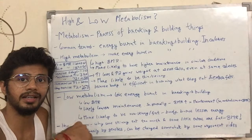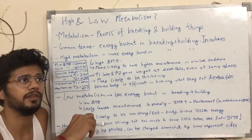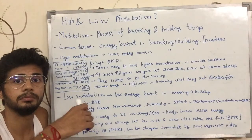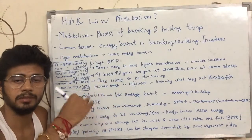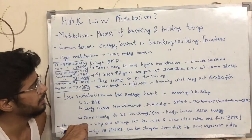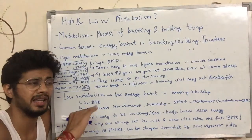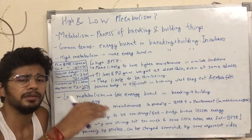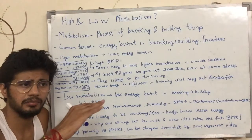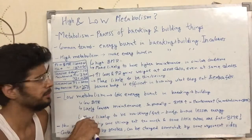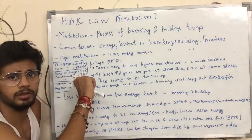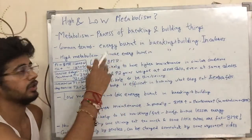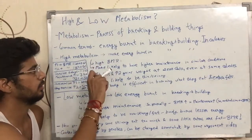High and low are relative — they are not absolute. People are said to have high metabolism if their metabolism is on a higher scale than an average human's metabolism, and low metabolism if they lie on a lower scale than average. So high metabolism means your body is burning a high number of calories in the metabolic processes — the breaking and building processes, anabolism and catabolism.